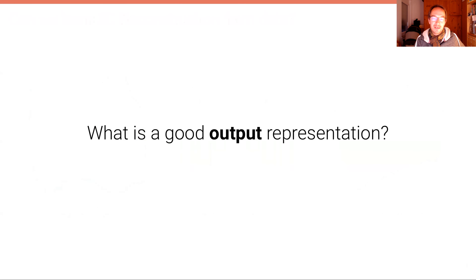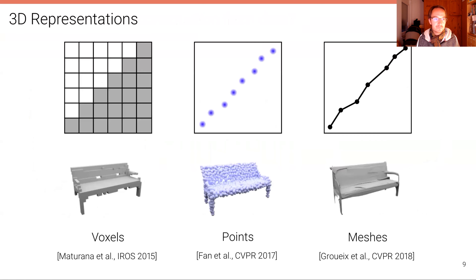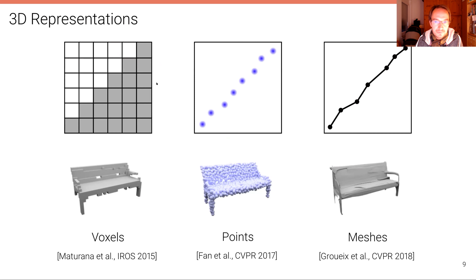One question we have to answer is: what is a good output representation? The input representation is clear — it's an image, a 2D pixel matrix, and we know how to process these using deep neural networks, in particular convolutional neural networks. A couple of representations existed before we started working on this. People used voxel-based representations, which is very natural as a direct extension of pixel representation into 3D space. You can generate such voxel grids with 3D convolutions quite easily, and one of the first seminal works doing this was presented at IROS in 2015.